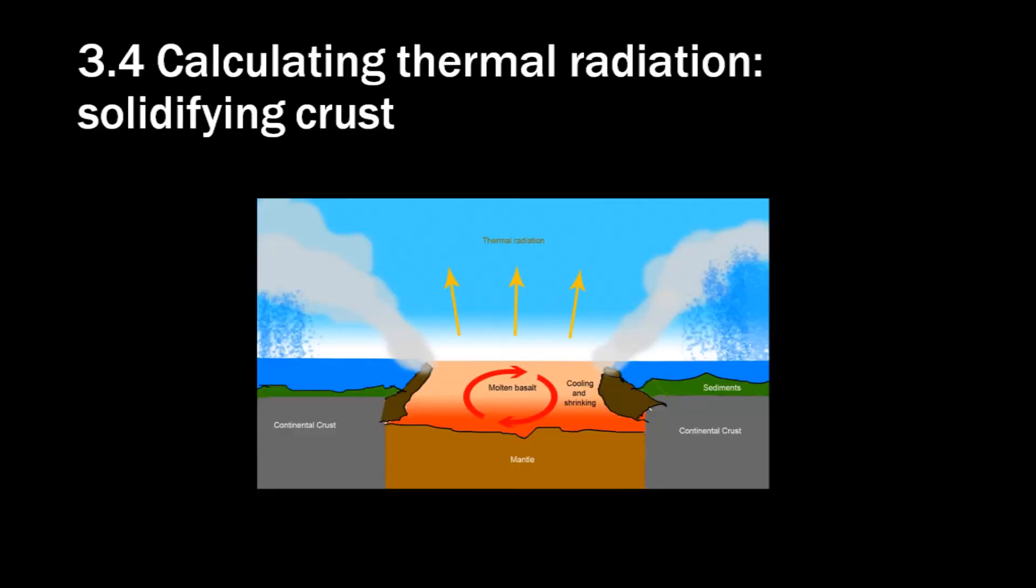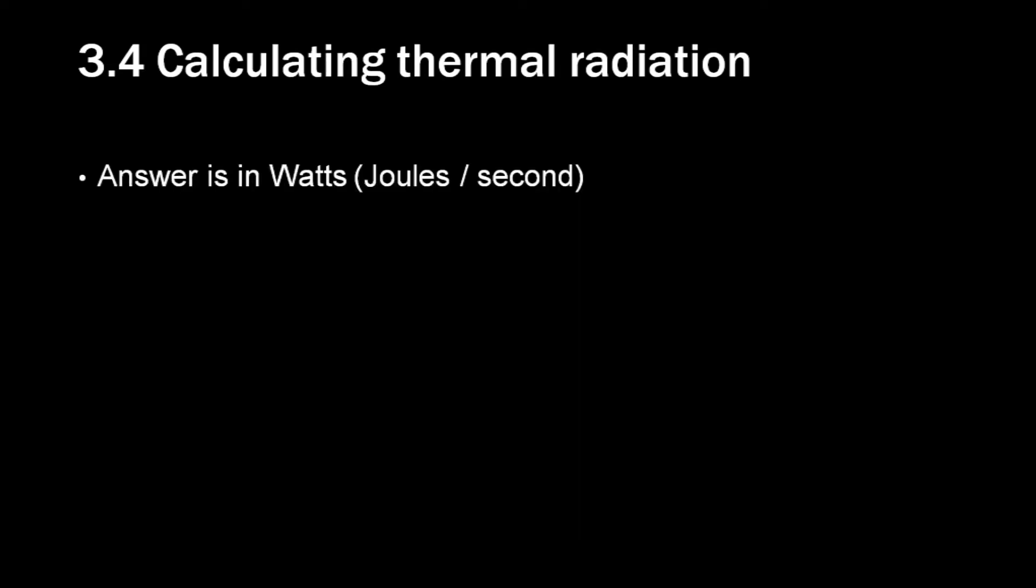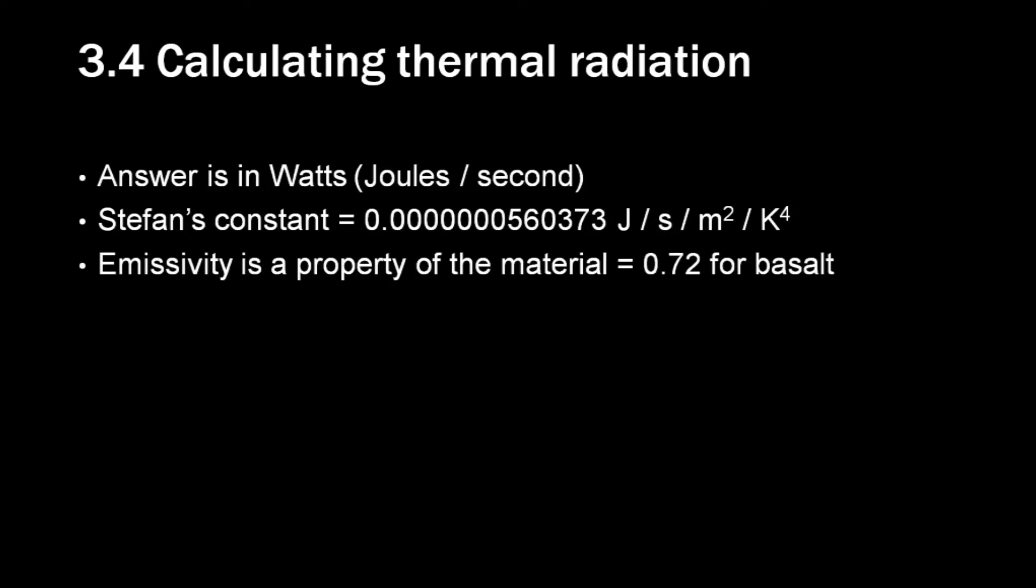When it comes to thermal radiation, we can actually calculate how long this would take. For that we need to use the Stefan-Boltzmann law. The result of this formula is energy per time. You get it by multiplying some constant value with the emissivity, the area, and the temperature. But the temperature is in the fourth power in this formula, resulting in a tremendous non-linear process. So the answer is in watts, or joules per second, and Stefan's constant is a very small number. The emissivity is a property of the material. We are going to calculate this for basalt, which is what the oceanic floor is made of.